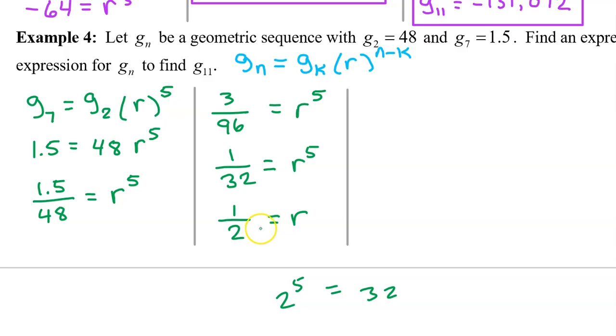Anyways, now that we have r, we can begin to write our expression for gn, which will be gk. And we can just pick one of these two. I always pick the smaller one. Well, I pick the lower index one, which is the 48. And then times r, so times 1 half, to the n minus k power. And here the k is 2, so n minus 2 power. So this is one expression for gn.